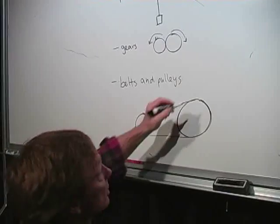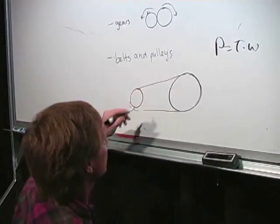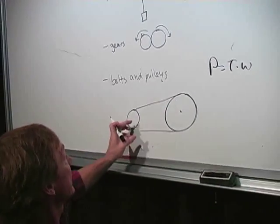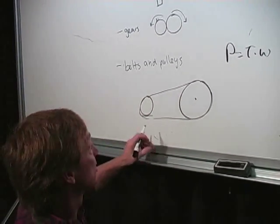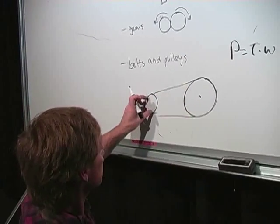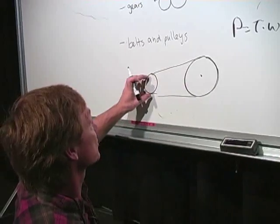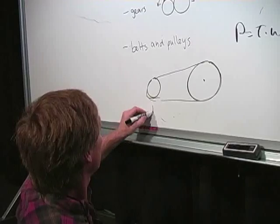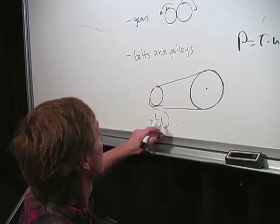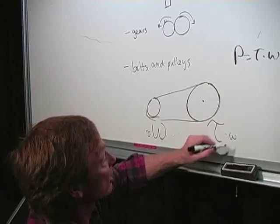I'm trading off between torque. The power is torque times angular velocity. If these are moving together, they're connected by a belt or a chain, then they're moving at the same speed. So this is going to have a higher angular velocity. So this will have a small torque and a big angular velocity. And this one will have a big torque and a small angular velocity.